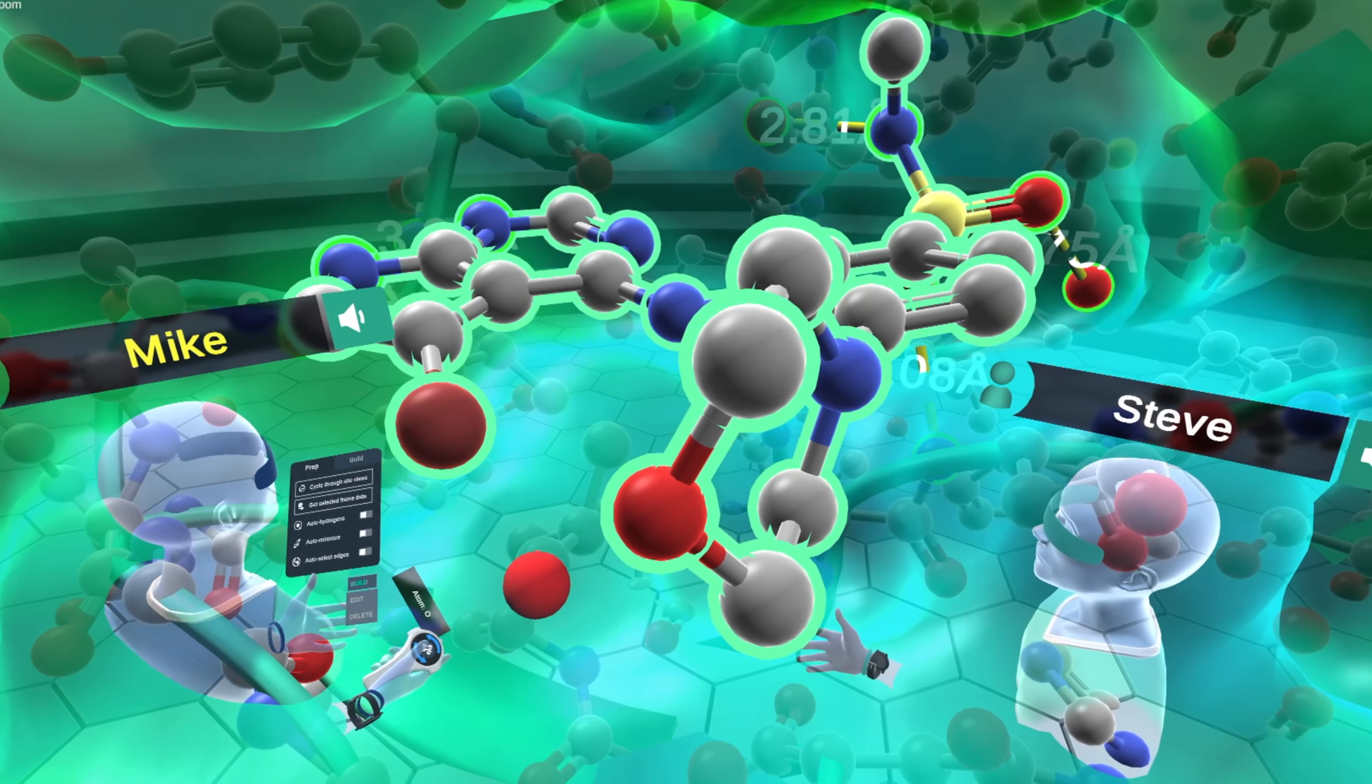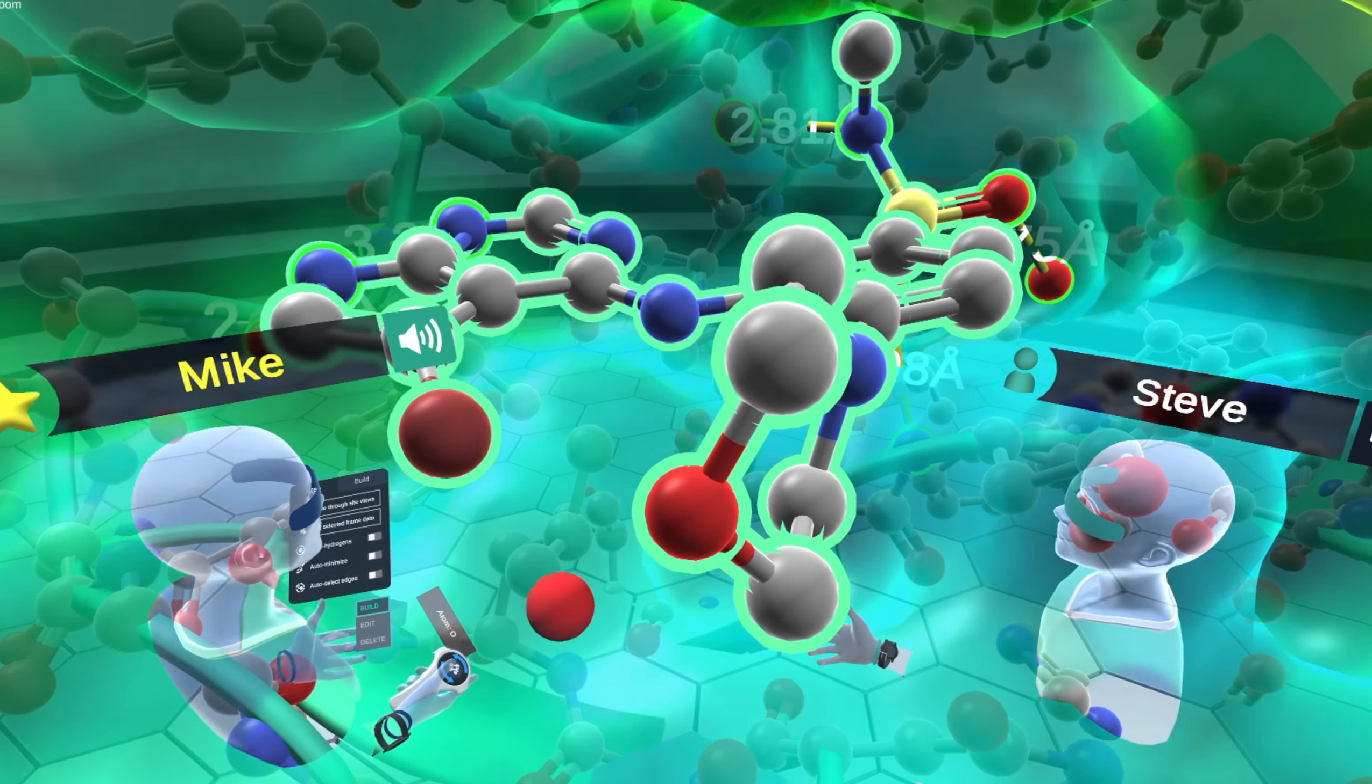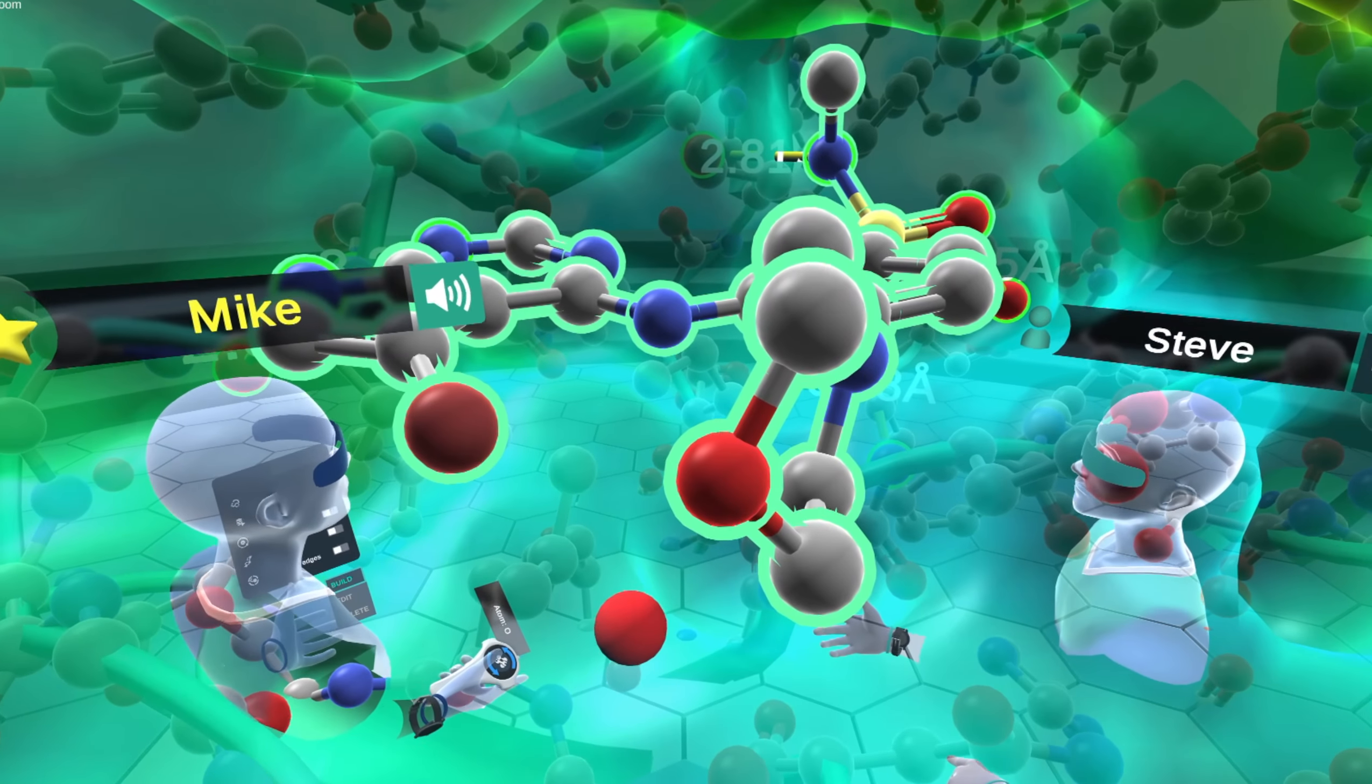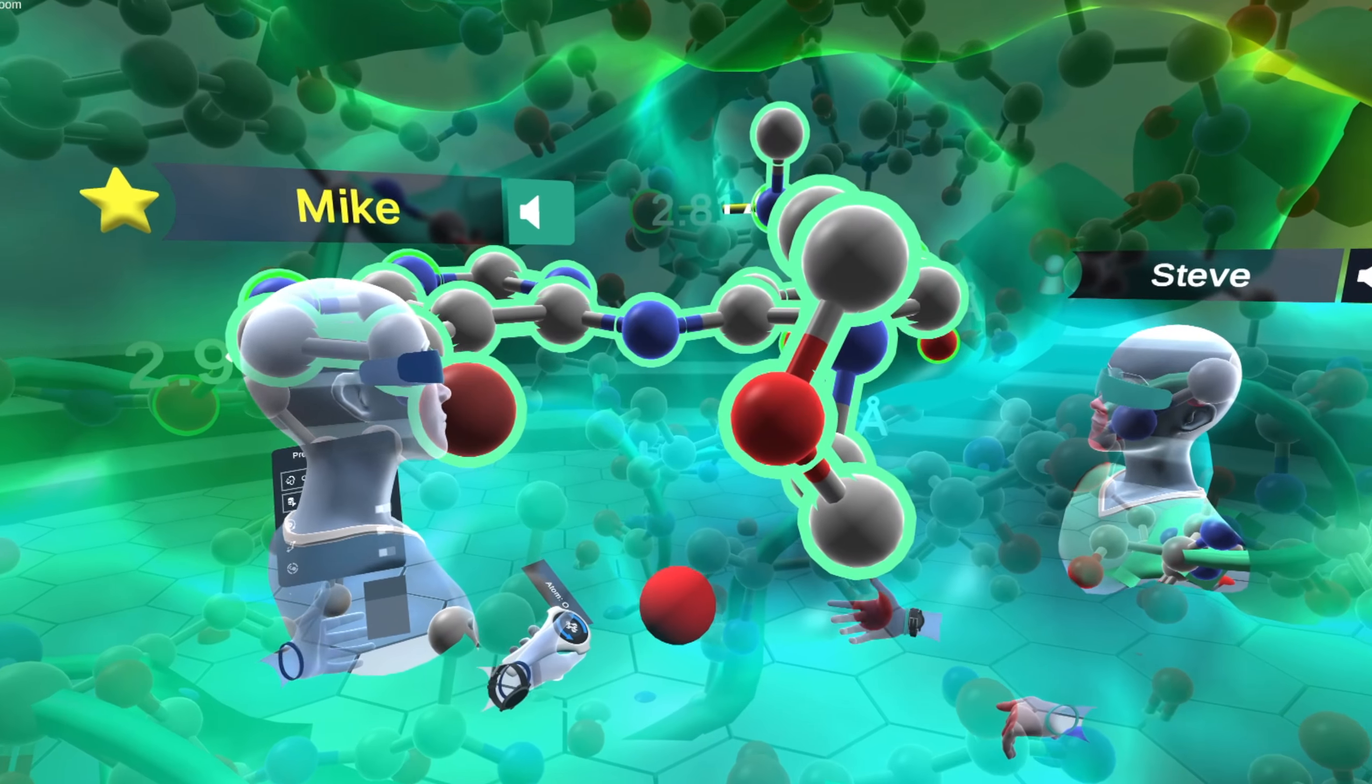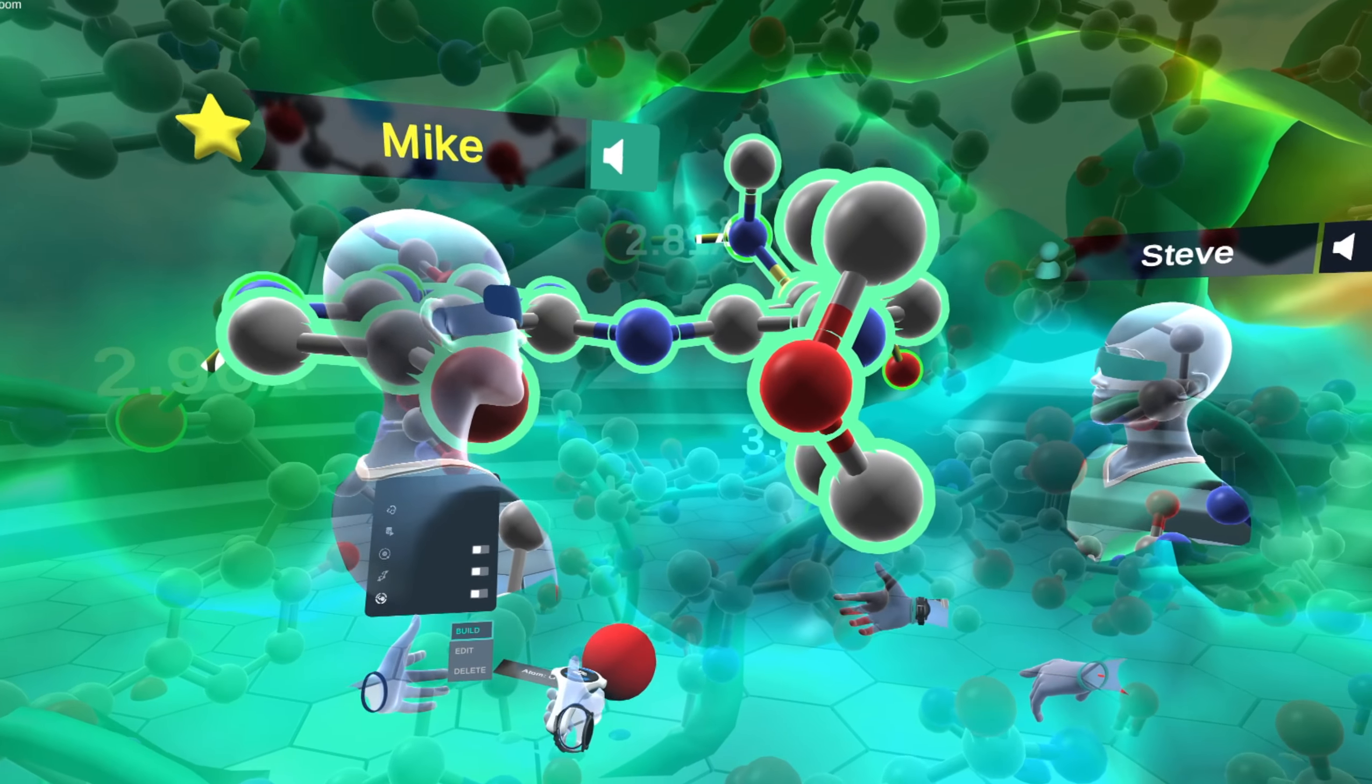So this is a type of tool molecule that they could optimize using structure-based drug design, using the protein. And in Nanome, where we are now, you can get a really good feel for interactions in virtual reality, as well as pockets that can be filled or clashes that you'll have if you put too large a group in a position.